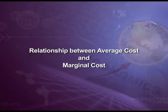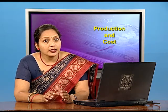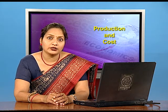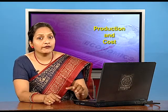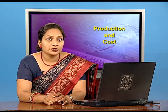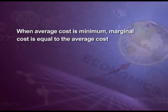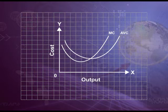The relationship between marginal cost and average cost is the same as that between any other marginal or average quantities. First, when average cost falls as a result of an increase in output, marginal cost is less than average cost. Second, when average cost rises as a result of an increase in output, marginal cost is more than average cost. When average cost is at its minimum, marginal cost equals average cost. In other words, the marginal cost curve cuts the average cost curve at its minimum point, that is, its optimum point.